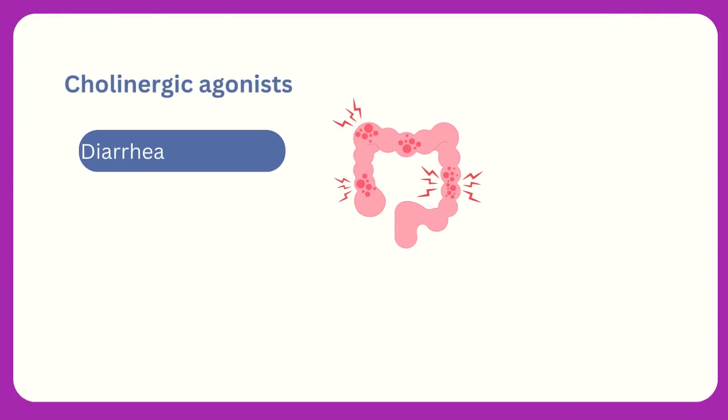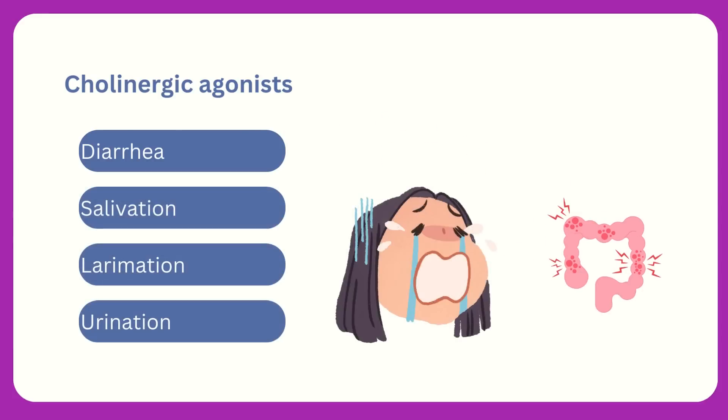Diarrhea is one of the common signs of cholinergic agonists. Other signs include salivation, lacrimation, and urination.